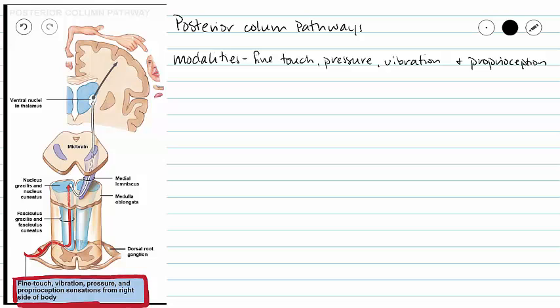Fine touch is a very specific type of touch. That means that you can tell what is touching you. You have very good discerning capabilities. Vibration and pressure are just a type of tactile sense. And then proprioception. Proprioception is the knowledge of body position.